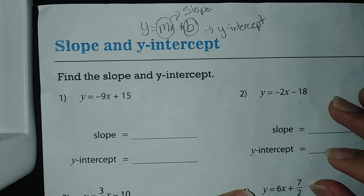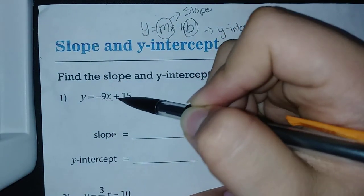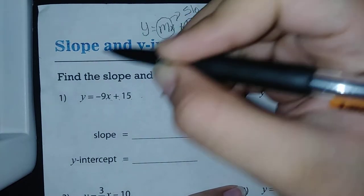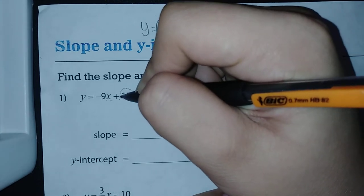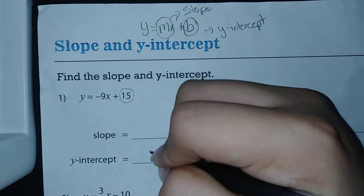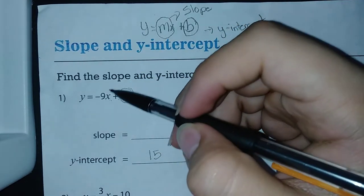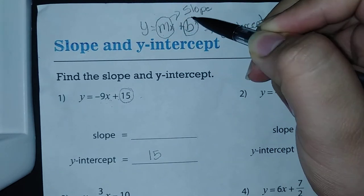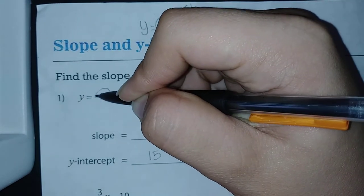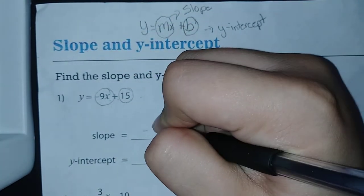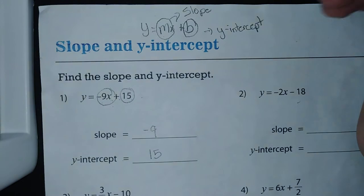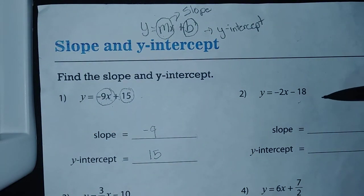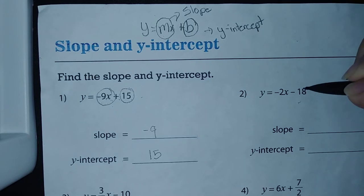Let's start with number one: y = -9x + 15. We know the y-intercept is at the far right after the plus sign, so our y-intercept is 15. Then we have -9x, where the mx gives us our slope, so the slope is -9.